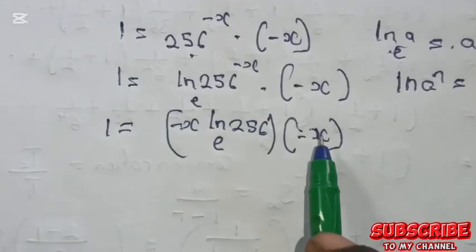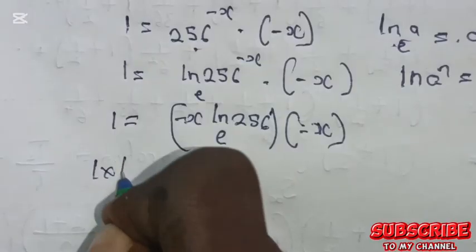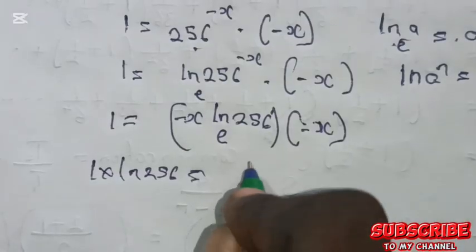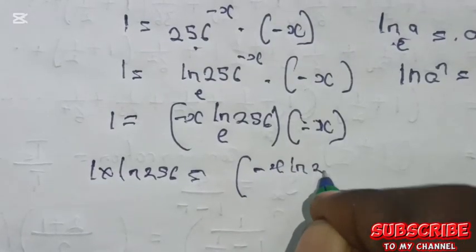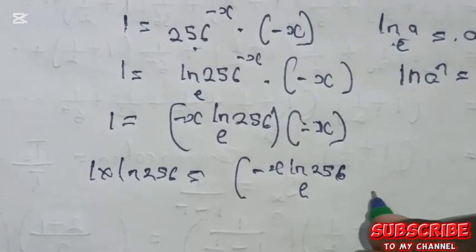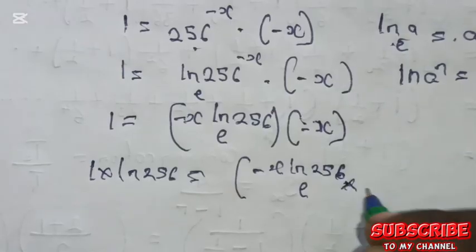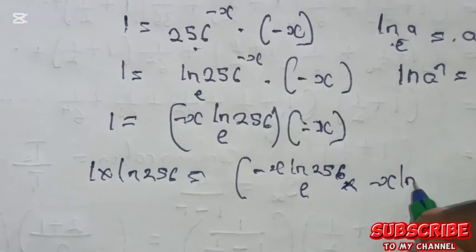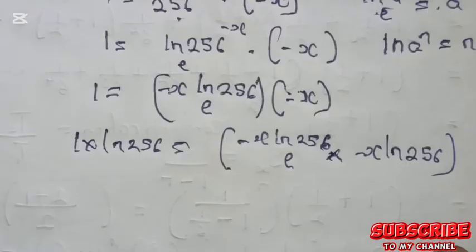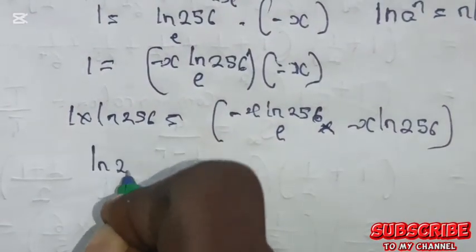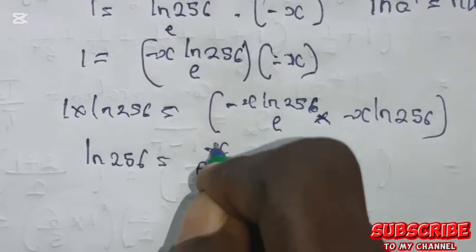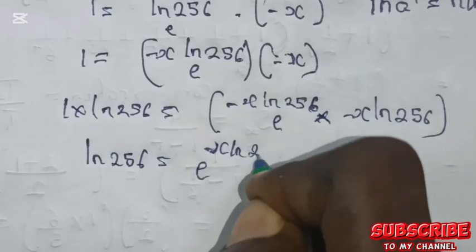Now multiplying both sides by the natural log of 256, we have the natural log of 256 equals minus x times the natural log of 256 base e, multiplied by e raised to the power of minus x times the natural log of 256. Let's write it as: the natural log of 256 equals e raised to the power of minus x times the natural log of 256.